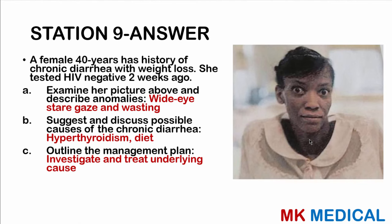When managing this patient, investigate first: order serum T3, T4, and TSH; stool microscopy, culture and sensitivity; full blood count with differential; liver function tests; and urea, electrolytes and creatinine. Once the underlying cause is identified, manage it. If hyperthyroidism, give antithyroid drugs. If dietary, modify the diet. If certain drugs are causing diarrhea, stop them or find an alternative solution.